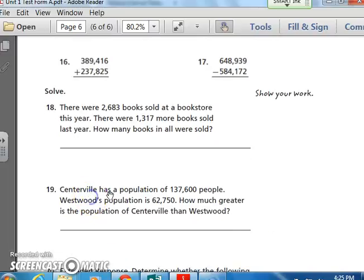Number 19, Centerville has a population, remember population is how many people are in a town or a city, of 137,600 people. Westwood's population is 62,750. How much greater is the population of Centerville than Westwood? So, I'm looking at 2 different towns. One has a population, Centerville, of 137,600 people. Westwood's population is 62,750. How much greater is the population of Centerville than Westwood? Pause and write your answer.